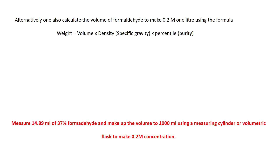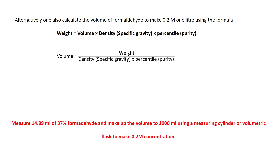Alternatively, you can calculate directly using: volume = weight ÷ (density × purity). Here purity is also considered in the formula: weight = volume × density × purity percentage. So volume = 6.0062 ÷ (1.09 × 0.37) = 14.89 mL.